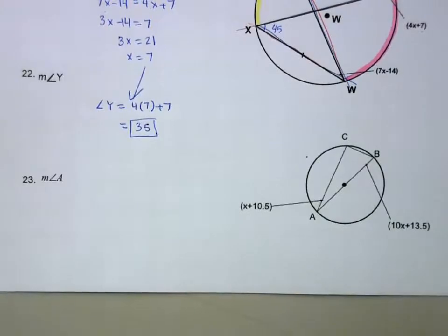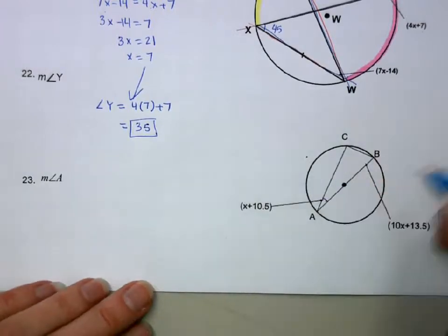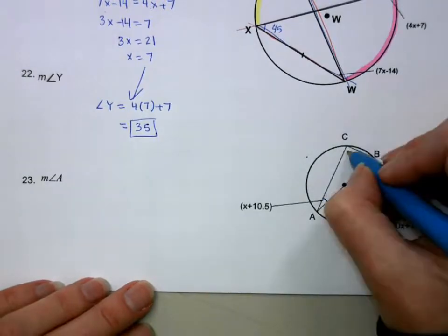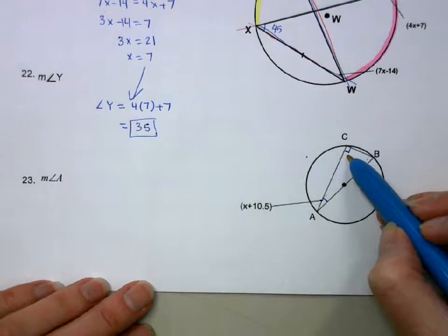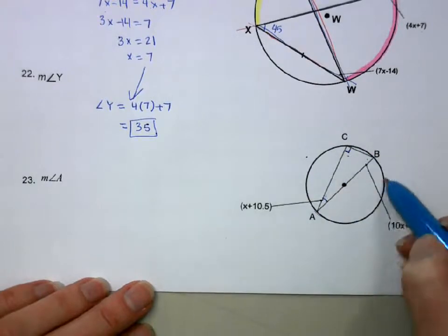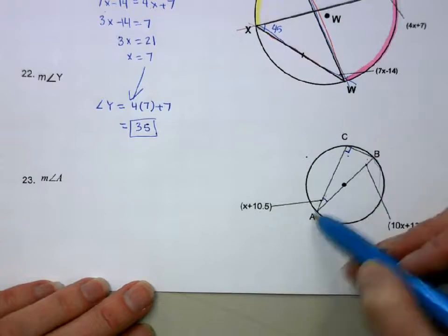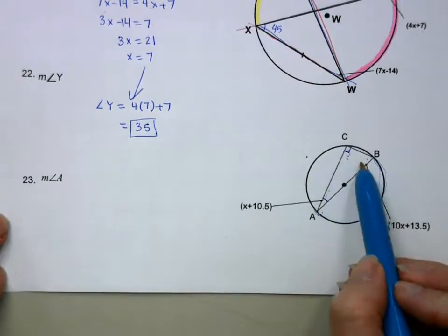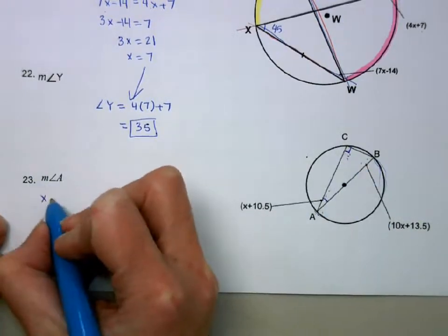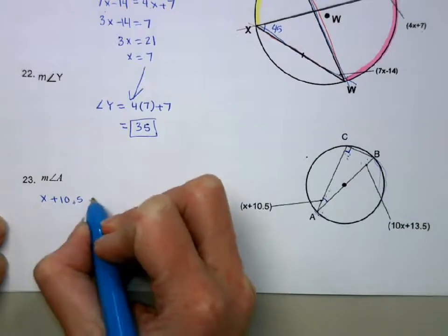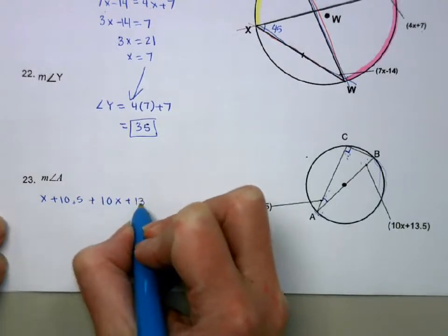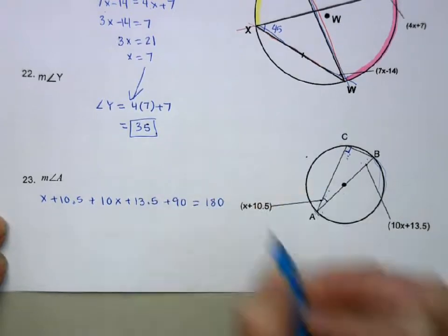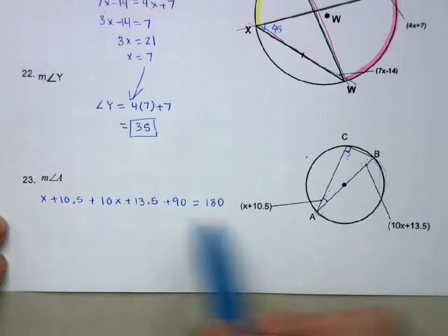For angle A, we're going to find this. It's going to be tempting to say, we'll just set these two equal to each other. But they are not equal to each other. What we do know is this has to be a 90 degree angle, because it's half of its intercepted arc. If the intercepted arc is, if this is a diameter, this is 180, which makes that 90. So what I can do, I know the three angles of a triangle add up to 180. So I can say X plus 10.5 plus 10X plus 13.5 plus 90 equals 180. Okay, or you can do the two acute angles equal to 90, if that makes more sense.